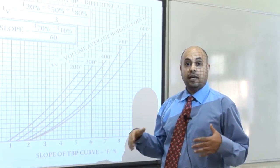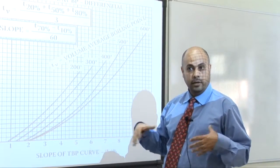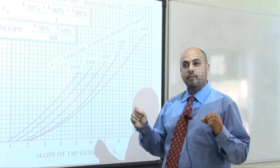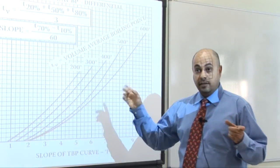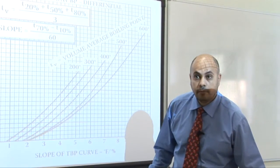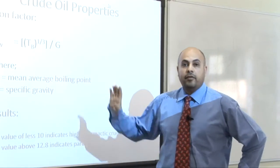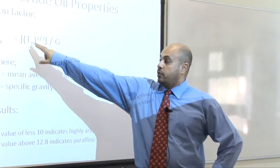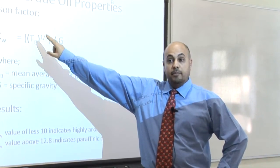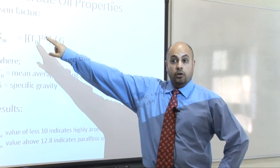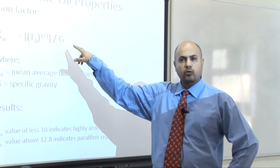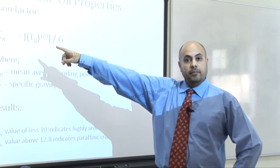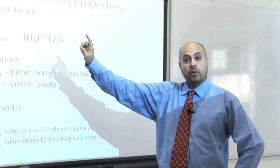There are more charts involved, but this is a simplified way that gives you an idea. Now, why is it important to find the mean average boiling point? There is something called the Watson factor. The number TB here is the mean average boiling point — you cube it and divide by the specific gravity of the crude, which you can measure simply in the lab. This gives you a number called the Watson factor.